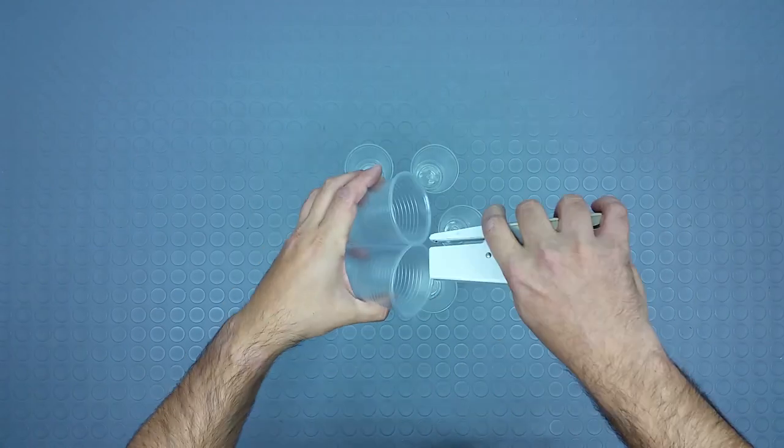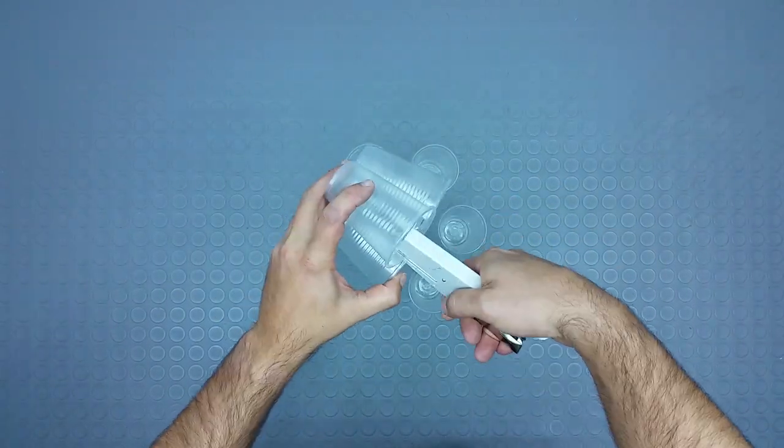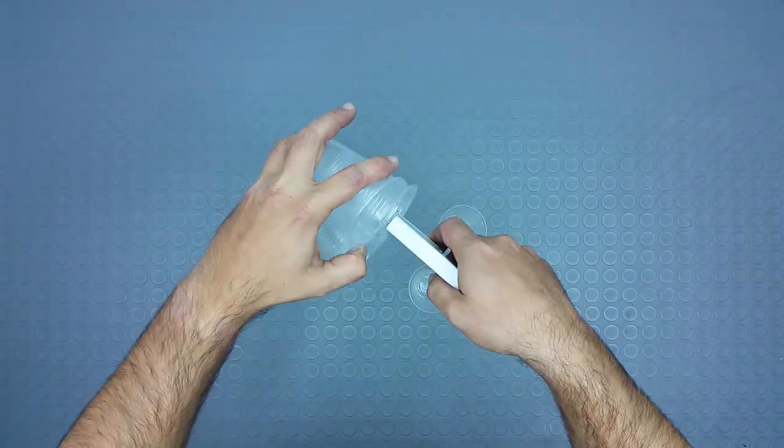Let's start to build the basic elements. We need 20 hexagons that I make putting 7 plastic tumblers together with a stapler.